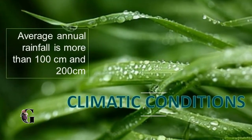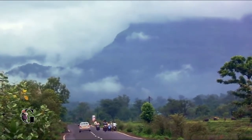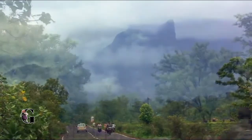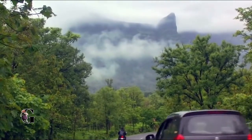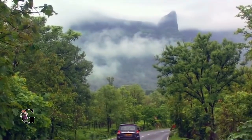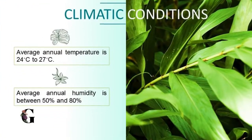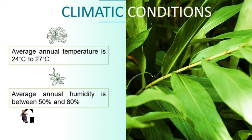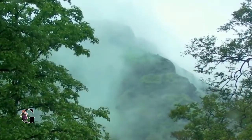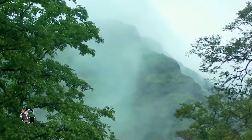Moist deciduous forests are found in areas with heavy rainfall for a major part of the year, followed by a marked dry season. The average annual rainfall is between 100 to 200 centimeters. On average, the annual temperature remains high, between 24 to 27 degrees Celsius. The humidity percentage also remains very high, at about 80 percent.